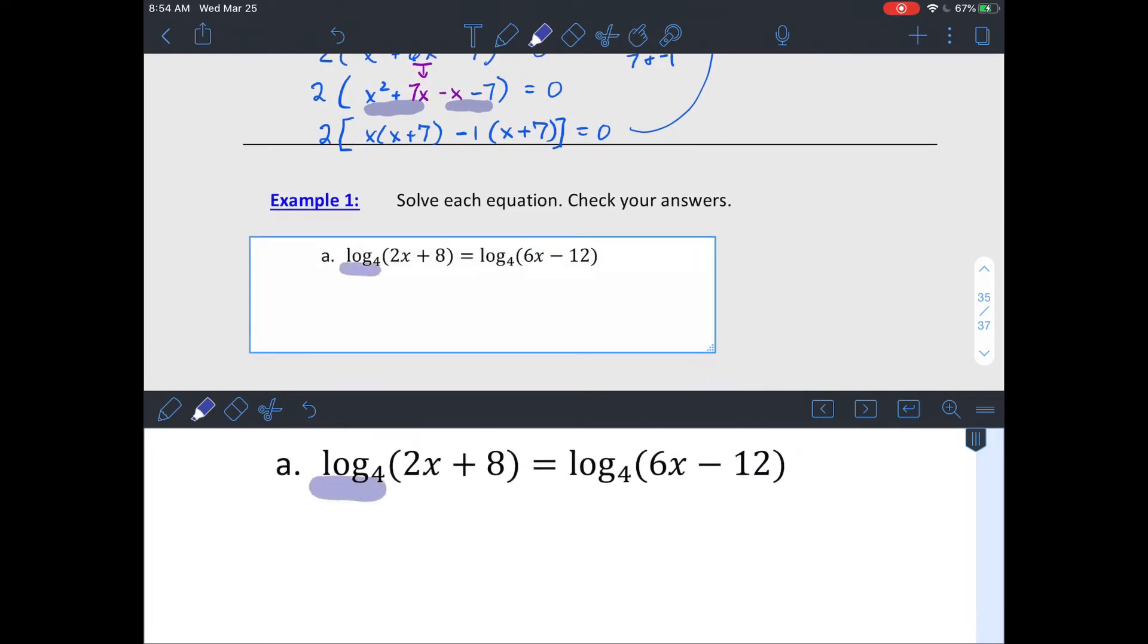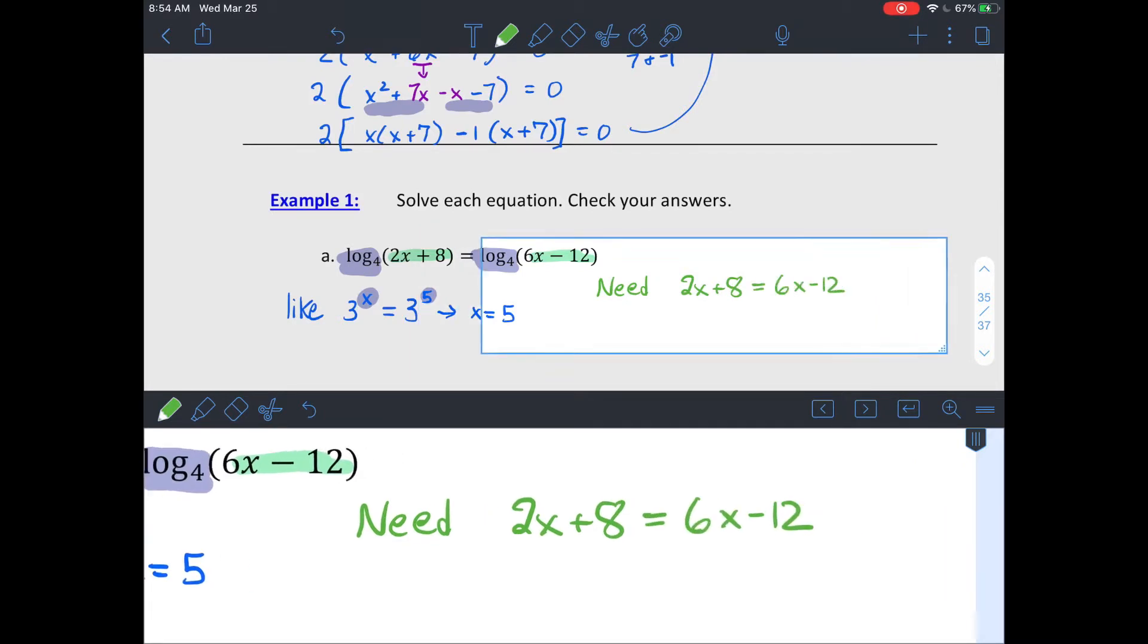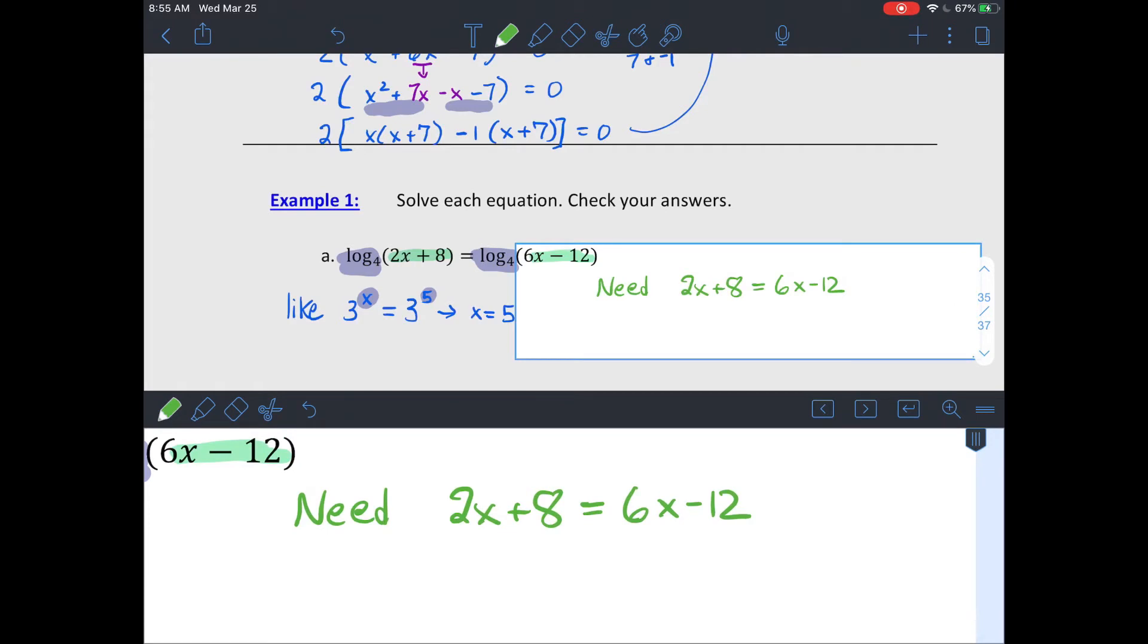We'll start off with a couple of simpler ones. So this is just a single logarithm on both sides of your equation. If you think back to when we had exponential equations, where the base is already matched, you just had to make sure that the exponents were the same to make both sides of your equation equal. This is sort of that same situation. So we have log base 4 on both sides. We just need to see what x values makes the inside of our logarithms equal to each other. So let's just set up an equation and solve to see what makes 2x plus 8 equal to 6x minus 12.